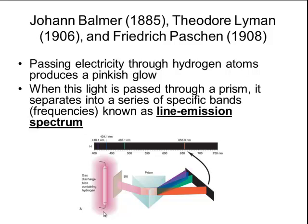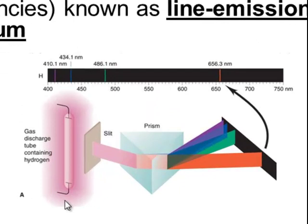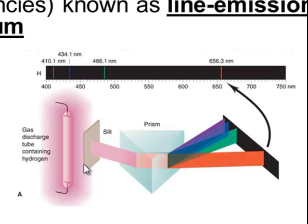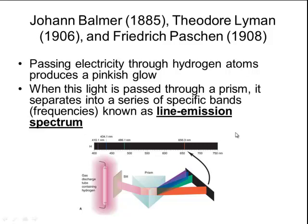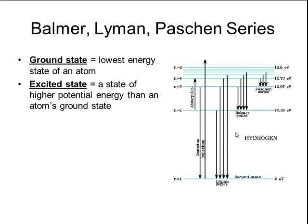However, when the light is passed through a prism, it actually separates into very specific bands or frequencies of light, and it produces what's called a line emission spectrum. So if I take this gas discharge tube, which is also like a cathode ray tube, and I look at the light through a prism, it gets separated into red, green, blue, and purple, and it produces very distinct bands. Red, green, blue, and purple. And that banding pattern is called a line emission spectrum.